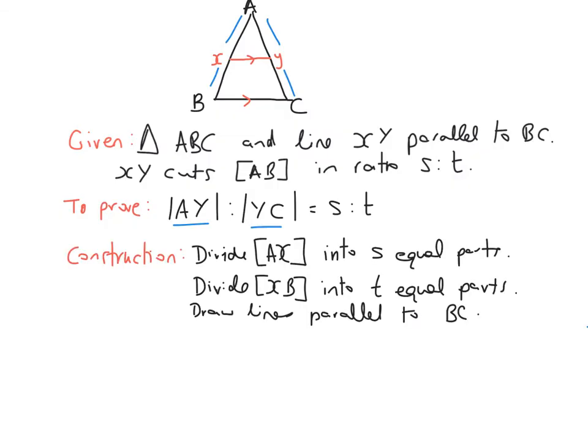So for the construction part of this proof, we need to imagine dividing AX into S equal parts. Obviously that's not a set amount. What you're going to do on your construction with the ruler is make sure it's parallel to BC, and you're going to draw some parallel lines across like this. So you need to imagine dividing that up into S equal parts.